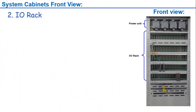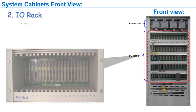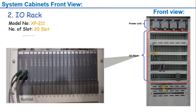The second section in the front view of the system cabinet is the I/O rack. The model number of the I/O rack in the GX300XP is XP211. The number of slots in the I/O rack is 20, equipped with the controller DTM, I/O modules, and power supply modules. The maximum number of I/O racks in one system cabinet is six.